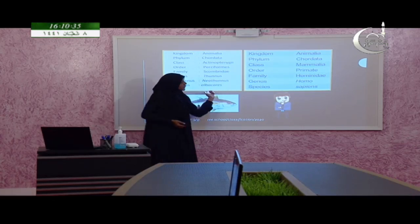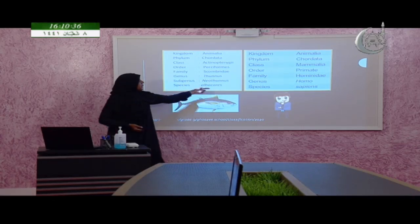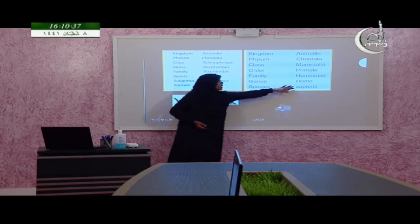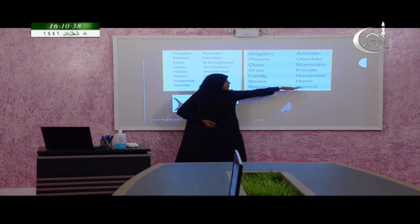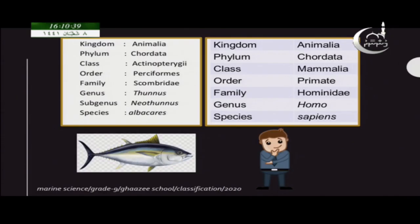Here you can see the scientific name written in italic form. All the other parts are in normal form, but the species name is written in italic.